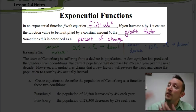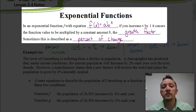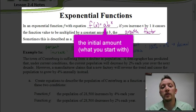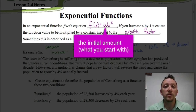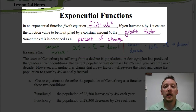An exponential function is going to be in this form: y, or f of x, equals a times b to the x power. That 'a' represents what we call the initial amount — what we start out with. 'b' is what we call the growth factor, and that's also sometimes called the percent of change.